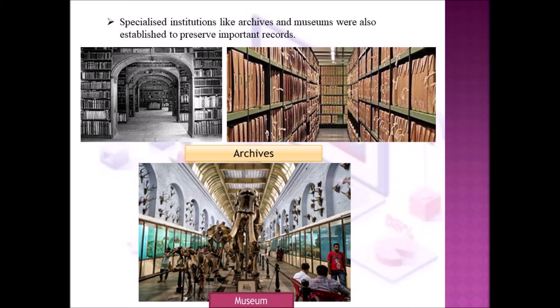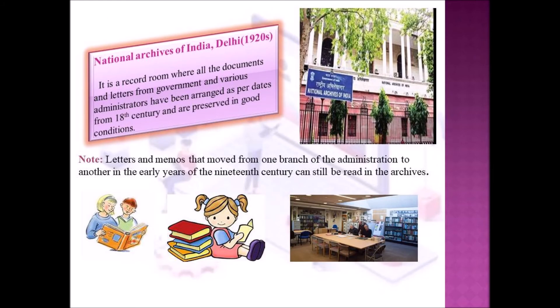But in the middle of the 19th century, multiple copies of these records were printed and were used by institutions like archives and museums to preserve important records. Here you can see the picture — this is the National Archive of India, which is in Delhi. It is a record room where all documents and letters from the government and various departments have been arranged as per dates and preserved in good condition from the 18th century, and we can still read all the letters and memos from this archive.